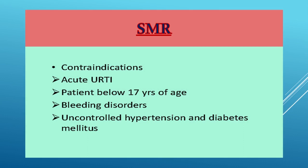SMR has certain contraindications. The first would be an acute upper respiratory tract infection — if a patient has an acute infection, the operation is usually deferred. A patient below 17 years of age is not usually supposed to have an SMR. Bleeding disorders are a contraindication for SMR. Uncontrolled hypertension and diabetes mellitus are not operated upon until the blood pressure and diabetes are brought under control.